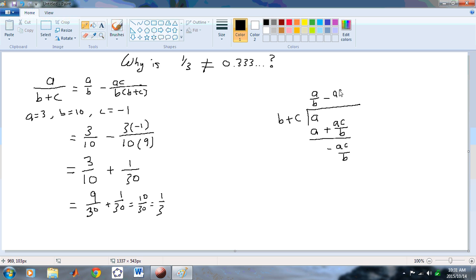AC over B squared. In which case, if we multiply these, we'll have minus AC over B minus AC squared over B squared. And we'll have a remainder here, which is AC squared over B squared.